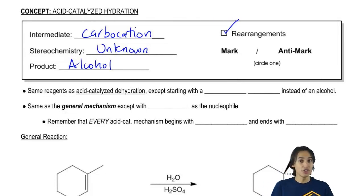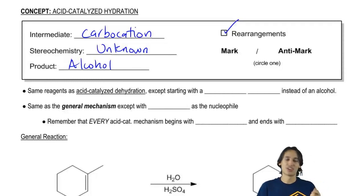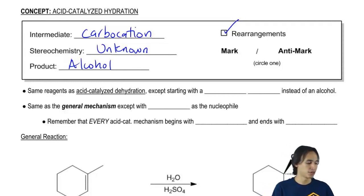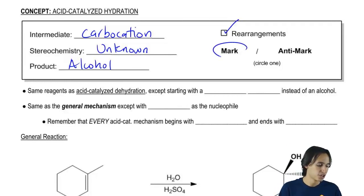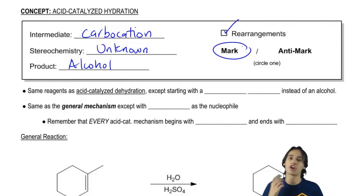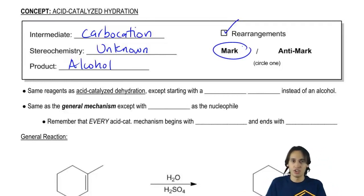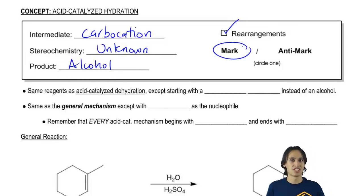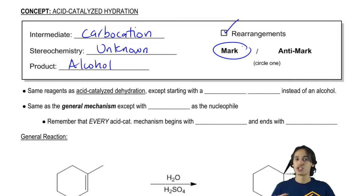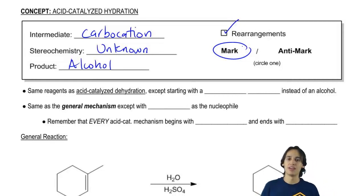Finally, the regiochemistry is going to be Markovnikov because, once again, we have a carbocation intermediate that's going to want to form in the more stable position. So those facts weren't that bad.